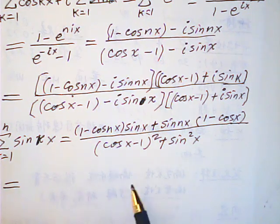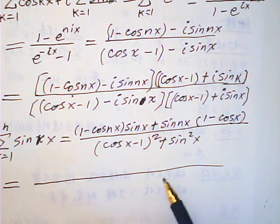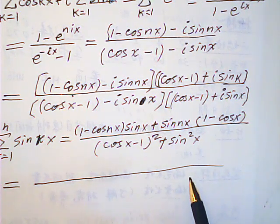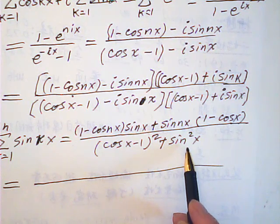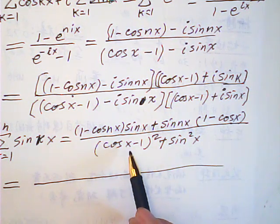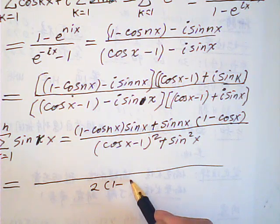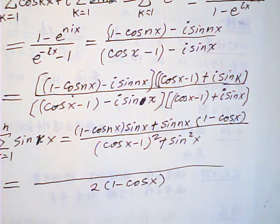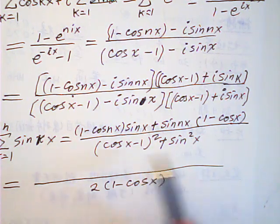Now for the denominator: cosine squared plus 1 plus sine squared is 2. So the middle term is minus 2 cosine x, and this becomes 2 times (1 minus cosine x).